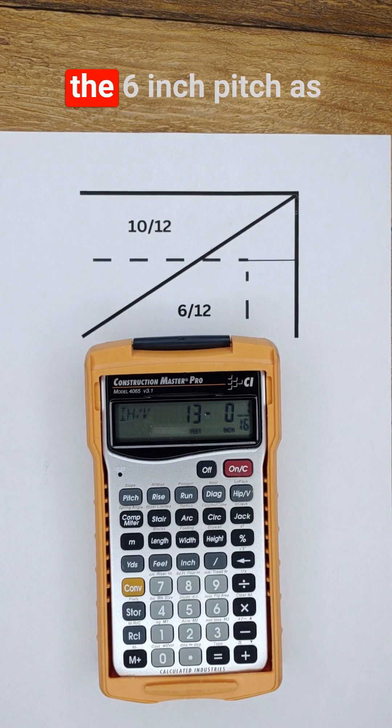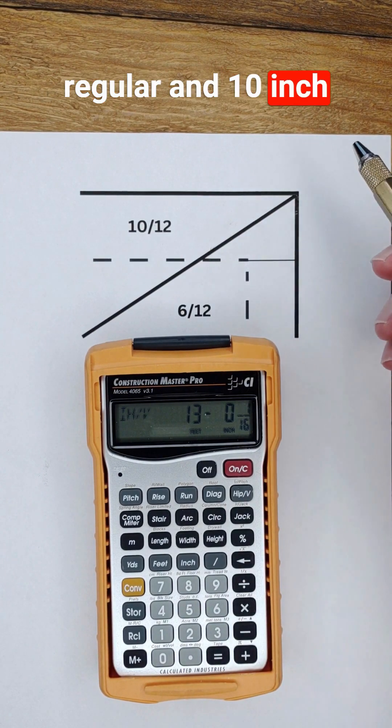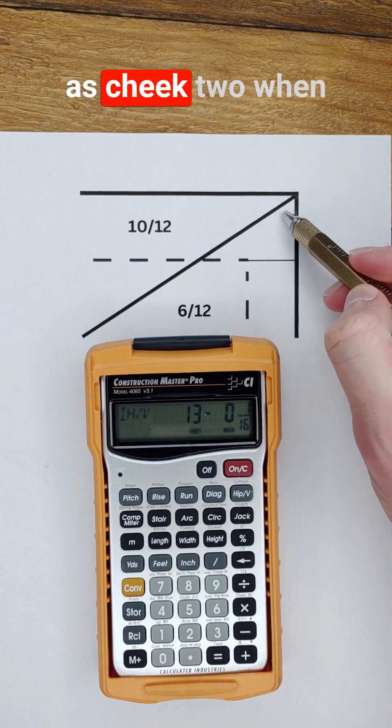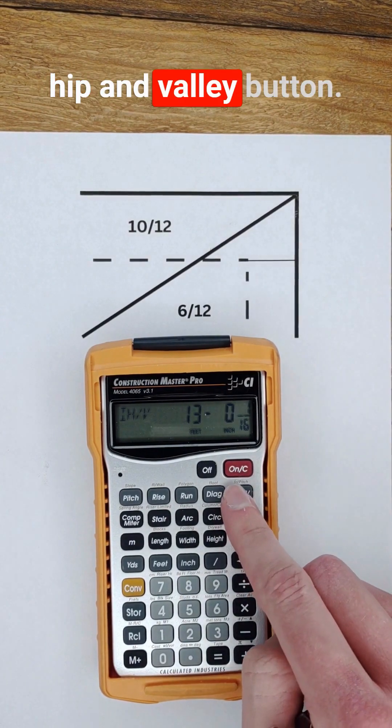Now since I entered the 6 inch pitch as regular and 10 inch as irregular, this angle will display as cheek two when I toggle through the hip and valley button.